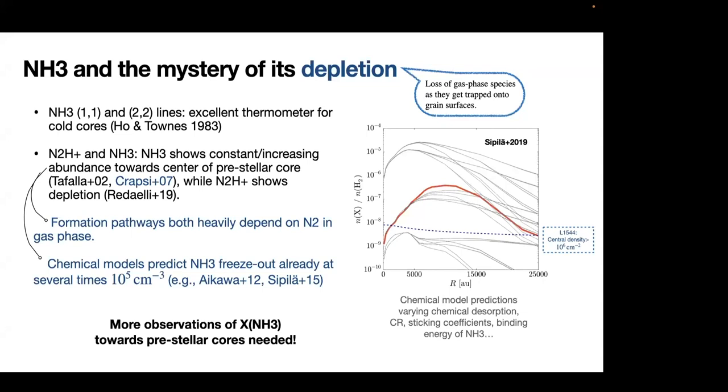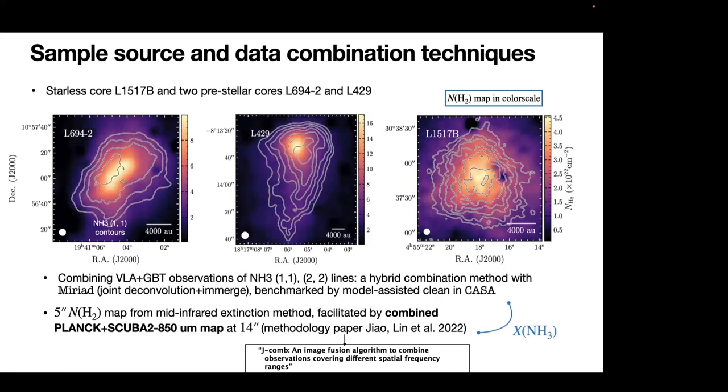I'm not saying that the chemical models we have for pre-stellar cores are perfect because there are also other uncertainties related to these parameters governing the abundance of ammonia. But it is important that we collect more observational results, which are high angular resolution ammonia abundance results towards pre-stellar cores so that we could further tailor the chemical model and refine the parameters in a guided way. So now I come to the main part of this work. We have three cores observed by GBT and VLA. These include one starless core and two pre-stellar cores.